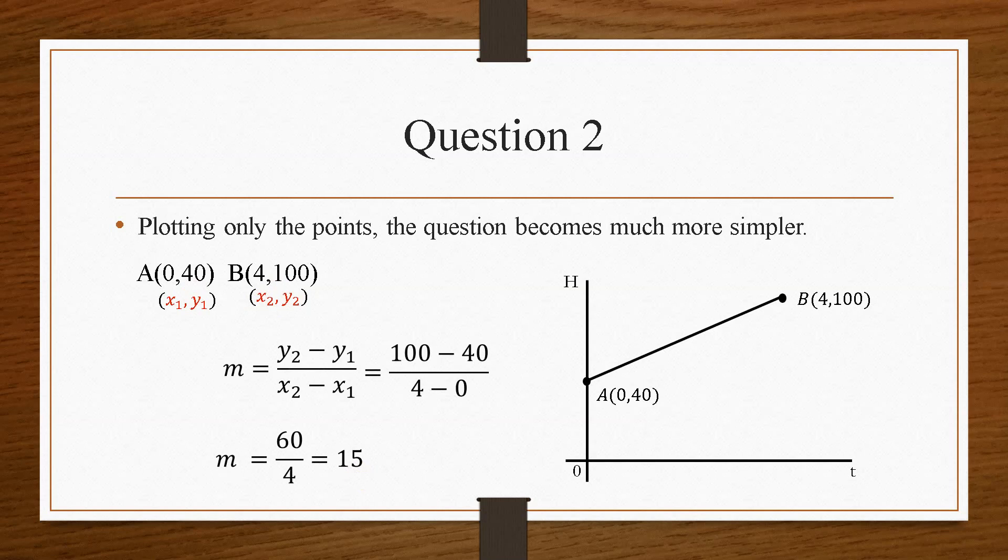Again, this is a positive value. So we expect the gradient to be in the positive direction. Now this means that this gradient, compared to the other one, is far steeper, because the value is a lot bigger.